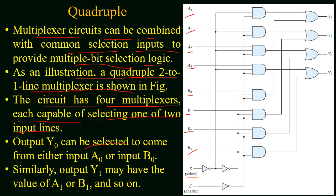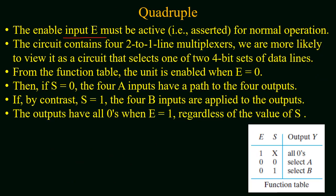The output Y0 can be selected to come from either input A0 or B0. Similarly the output Y1 may have the value of A1 or B1, Y2 may have the value of A2 or B2, and finally Y3 can have a value from A3 or B3. The enable input must be active for normal operation, and if it has a value of 1 all the outputs are equal to 0, because the circuit is based on active low logic. The circuit selects one of the two 4-bit sets of data lines.